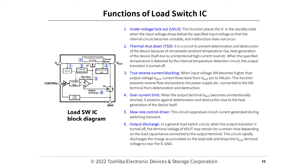(4) Overcurrent limit - when the output terminal Vout becomes unintentionally shorted, it protects against deterioration and destruction due to heat generation of the device. (5) Slew rate control driver - this circuit suppresses inrush current generated during switching transient. (6) Output discharge - in a general load switch circuit, when the output transistor is turned off, the terminal voltage of Vout may remain for a time depending on the load capacitance connected to the output terminal. This circuit rapidly discharges the charge accumulated on the load side and drops the Vout terminal voltage to near IC ground.